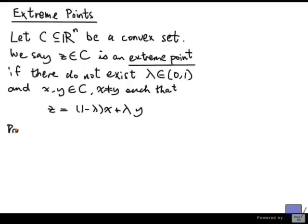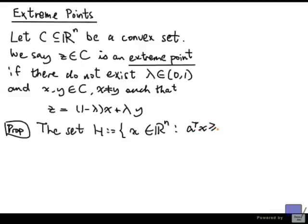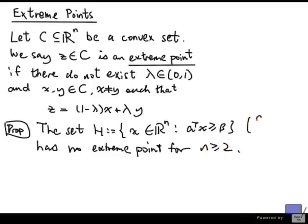Okay, so we call this a proposition. The set H given by x in R^n such that A transpose x is greater than or equal to beta has no extreme point for n greater than or equal to 2. Here A is in R^n, A is not 0, and beta is in R.